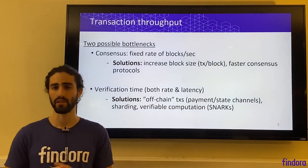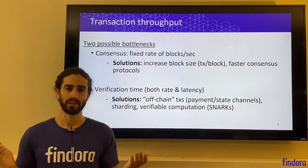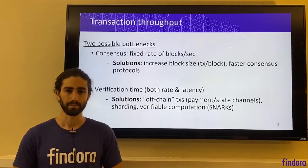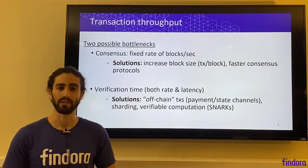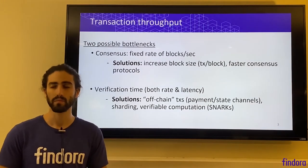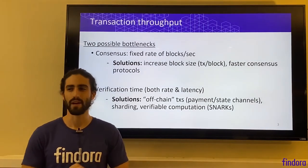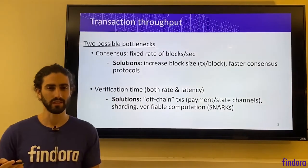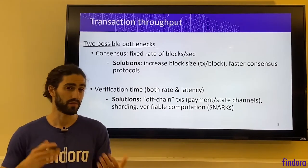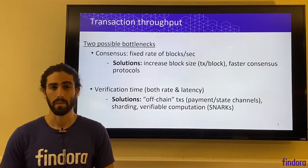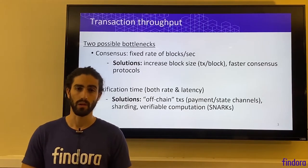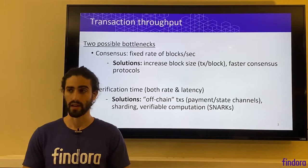Solutions to get around this are either: A, increase the block size — increase the number of transactions per block that is agreed upon in the consensus protocol, so agree on more transactions in one go. Or, develop faster consensus protocols. When we get to discussing the variety of consensus protocols in the next few lectures, we'll see that there are different fundamental trade-offs that balance different types of security models for consensus protocol with the ability to run the consensus faster.